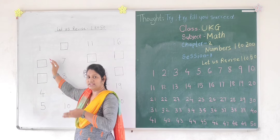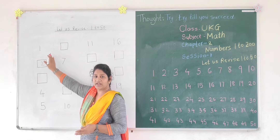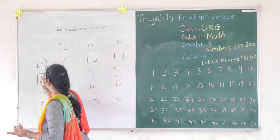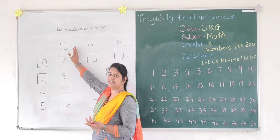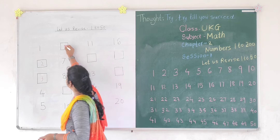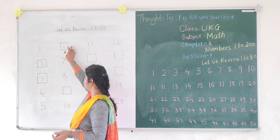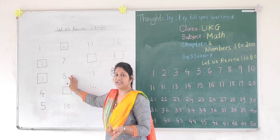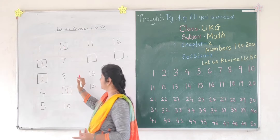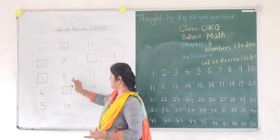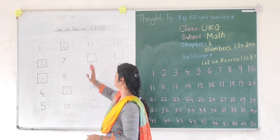This is number 1. After number 1, which number will come? 1, 2. So I have drawn here: 2. 1, 2, 3. 1, 2, 3, 4, 5, 6, 7, 8. After 8, which number will come? 9. 6, 7, 8, 9, 10.